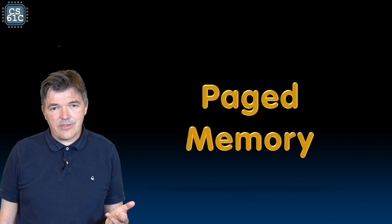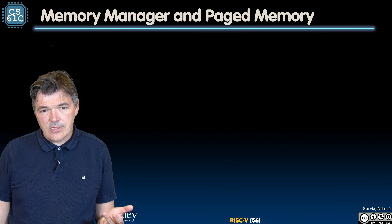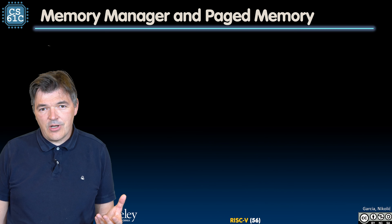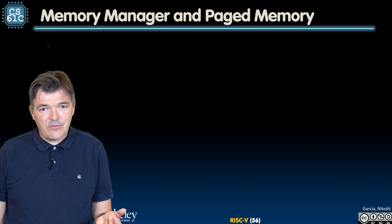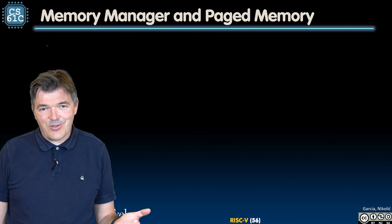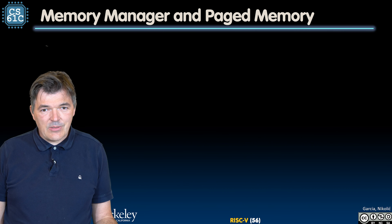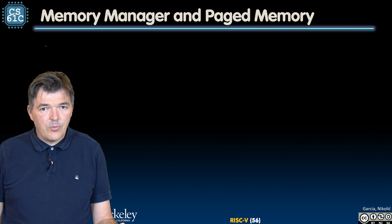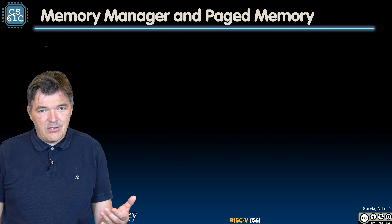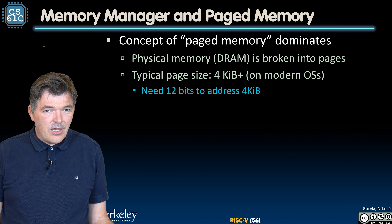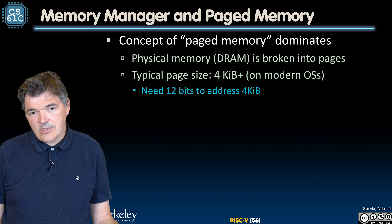Let's take a look at how this swapping actually works. Generally it is a good idea to always move a constant, fixed chunk of data between the DRAM and the disk. Remember, simplicity is what we strive for in computer architecture, so we don't want a variable amount of data as it will be difficult to address. That fixed chunk of data is going to be called a page, as it is called in most modern operating systems.